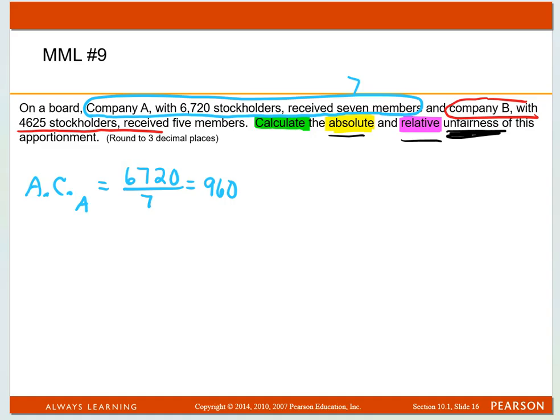So the average constituency of Company B is 4,625 divided by the five members, and that comes out to be 925.